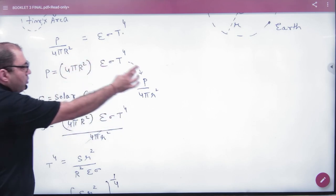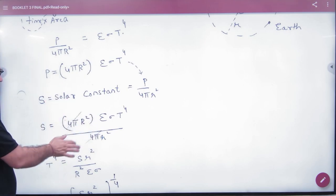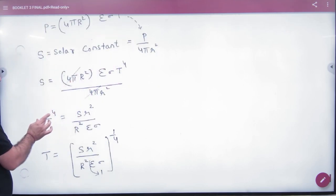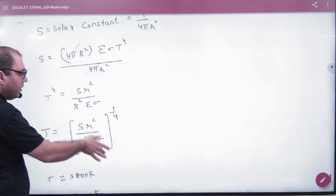The solar constant equals the whole power divided by 4πr². Put P here and the 4π cancels from numerator and denominator. The temperature appears to the fourth power, so the fourth root is taken on both sides. Then the values are put in.